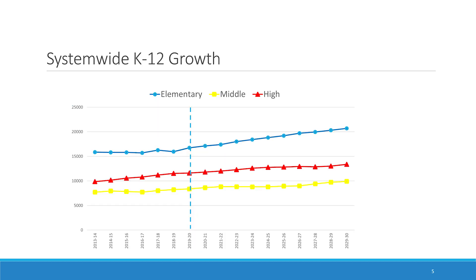To be more quantitative about it, we have a chart that shows your forecasted membership looking forward over the next 10 years. This is broken down by level: elementary, middle, and high schools. The elementary schools are really the level that accelerate the fastest.